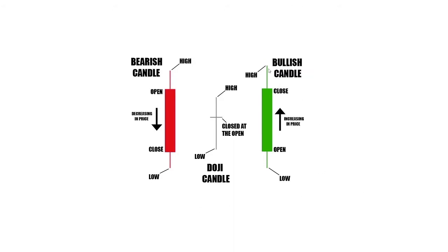Candlesticks also have these little wicks, or tails, or shadows — I'm going to be calling them wicks in this video. What these wicks are telling you is where the price went within that time frame. On this bullish candle, within the five minutes, the price opened here, then before it closed it reached this low and reached this high. It just never closed at those prices — at the end of the five minutes, it ended up closing here.